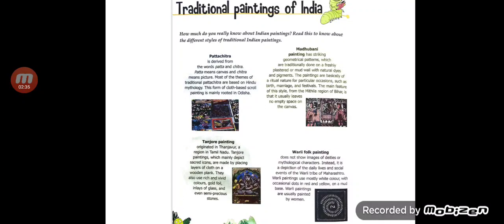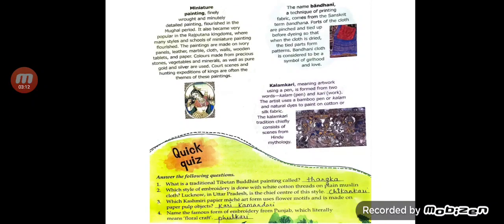Next is Varli folk painting. It does not show images of deities or mythological characters; instead, it depicts the daily lives and social events of the Varli tribe of Maharashtra. Varli paintings use mostly white color with occasional dots in red and yellow on a mud base, and are usually painted by women.